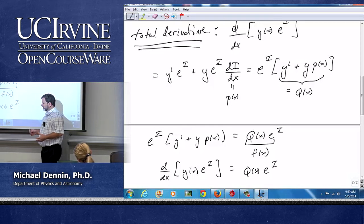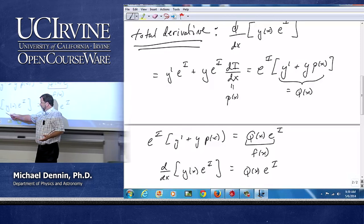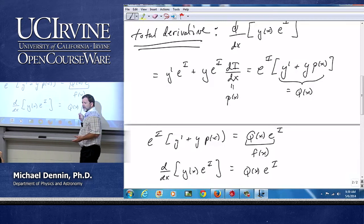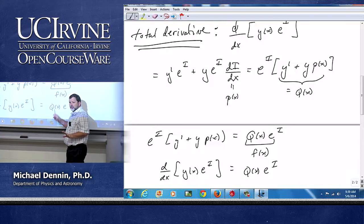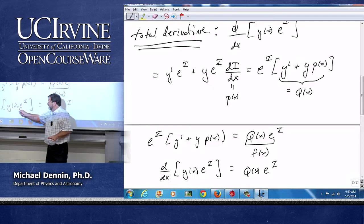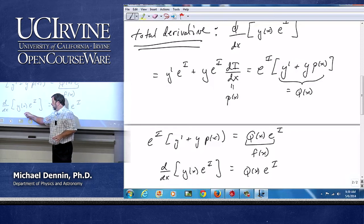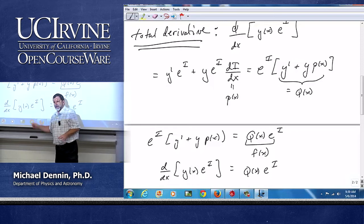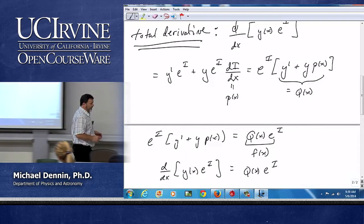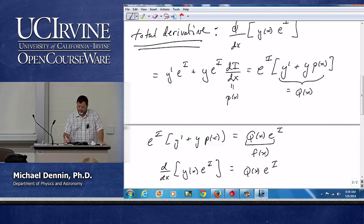Because I can take my dx over here. This is purely a function of x. There's no y's in it. I can integrate this side. The integral of the total derivative is just the stuff here. And I'm done. I divide by e to the i and I have a solution. So if I do that, I see that y of x e to the i just equals the integral of q of x e to the i dx.